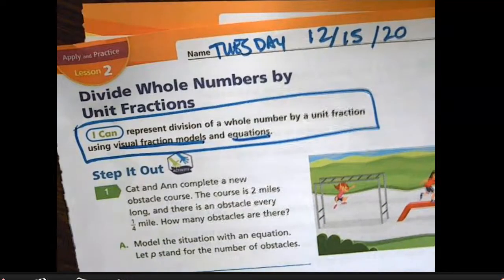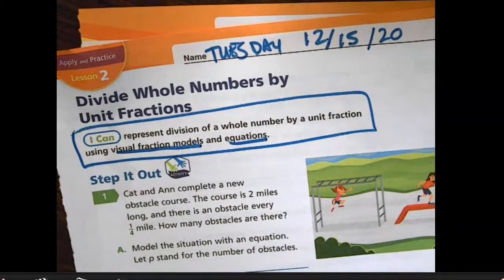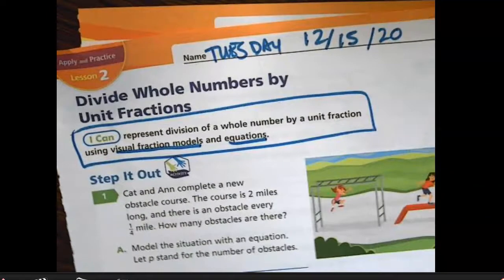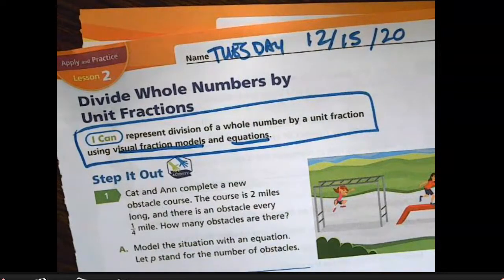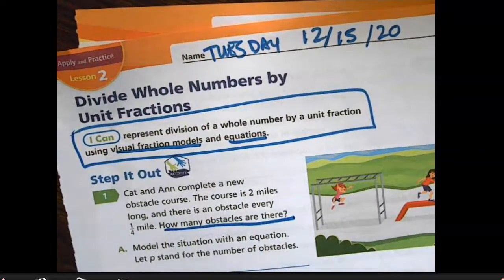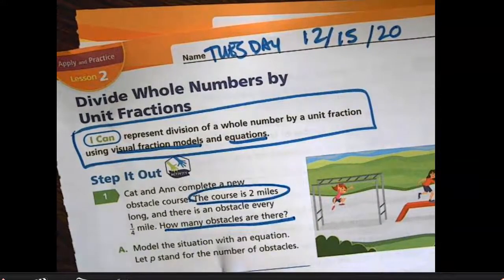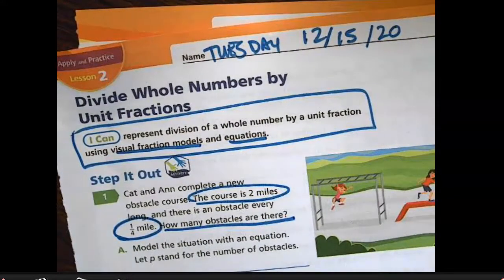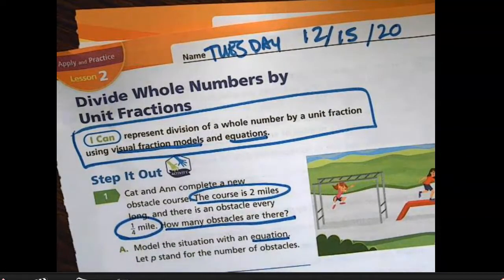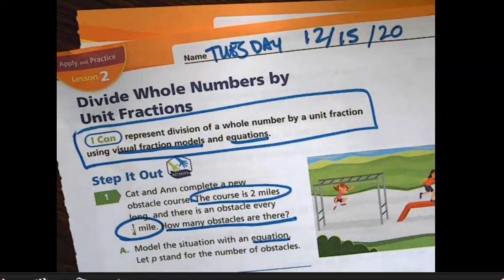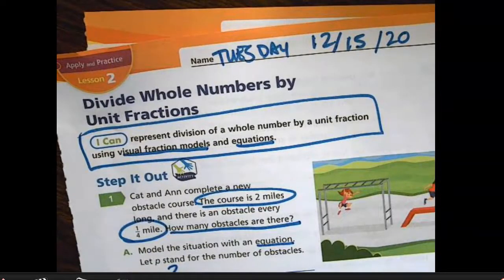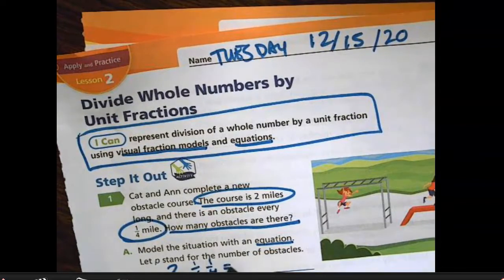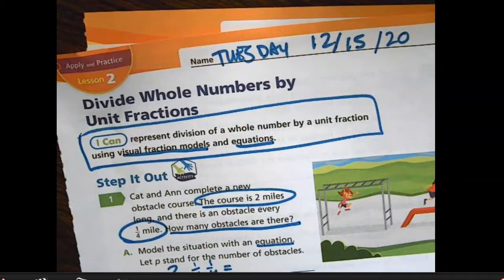We're going to begin by reading the problem, underlining our question, and figuring out what we know and what we don't know to find our answer. Cat and Ann complete a new obstacle course. The course is two miles long. If there is an obstacle every one-fourth of a mile, how many obstacles are there? We don't know how many obstacles there are, but we know the course is two miles long and every one-fourth of a mile there is an obstacle. So the dividend is two miles, and we divide by one-fourth.